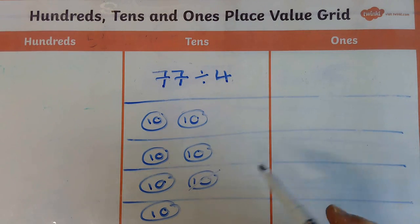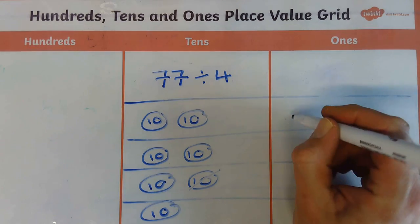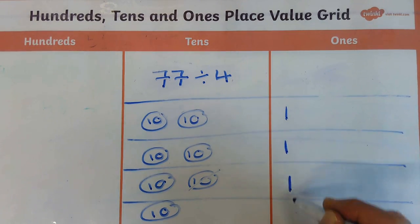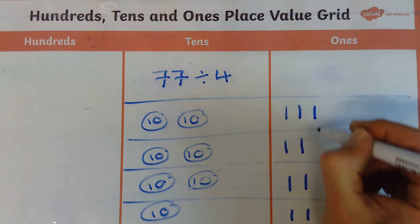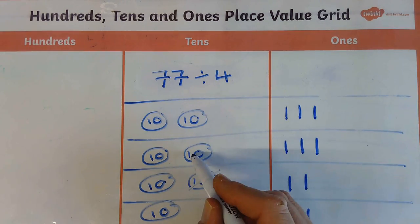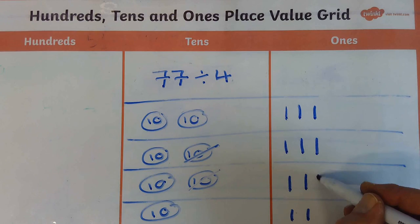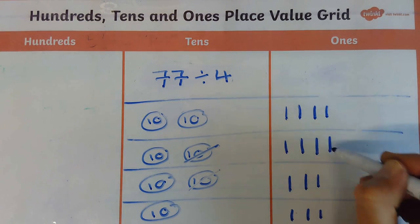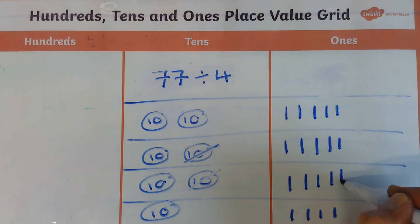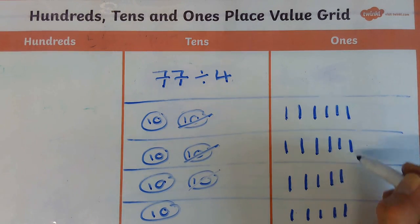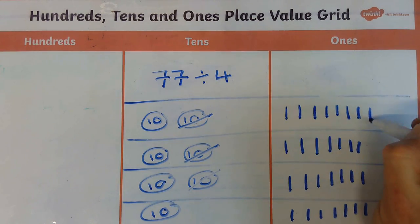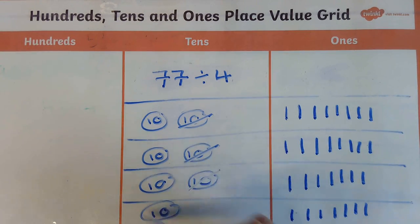So I'm going to cross out the 10 here and I'm going to put it into the ones. So I'm going to go 1, 2, 3, 4, 5, 6, 7, 8, 9, 10. I'm going to cross out the second 10, counting 1 through 10 again. Cross out the third 10, counting 1 through 10. So we've done the tens.